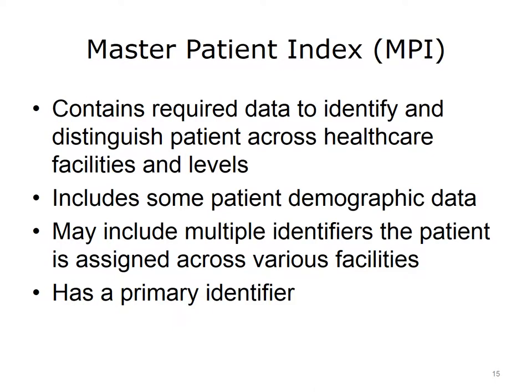Master Patient Index systems are necessary to locate a patient, particularly if the patient has multiple numbers across many systems. A clinic may assign one number, the hospital another, an employer another, and the insurance plan another — the MPI links all of these numbers together. The MPI contains required data to identify and distinguish the patient across health care facilities, includes some patient demographic data, may include multiple identifiers the patient is assigned across various facilities, and has a primary identifier. The MPI may also provide a linkage to other family members. Issues of privacy and security are factors in designing and accessing MPIs.